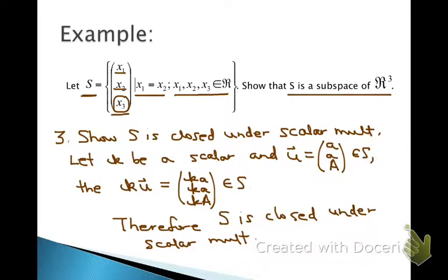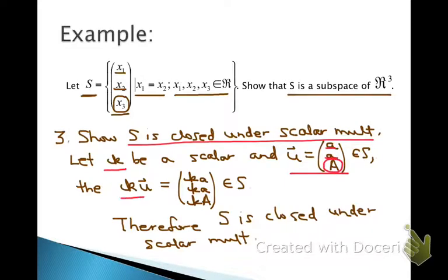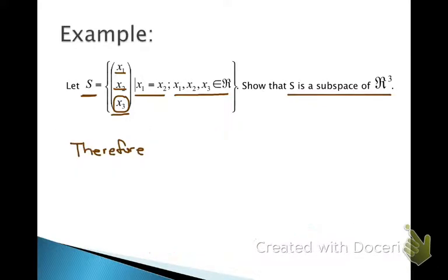For closure under scalar multiplication, let K be a scalar and U = (a, a, A) be an arbitrary vector in S. Then K times U equals (Ka, Ka, KA), where the first two elements are the same and the last is any value, so it belongs to S. Therefore S is closed under scalar multiplication. Since S contains the zero vector, is closed under vector addition, and is closed under scalar multiplication, we conclude that S is a subspace of R3.